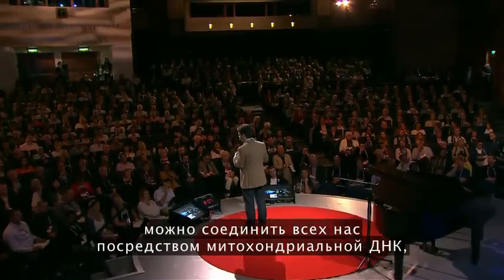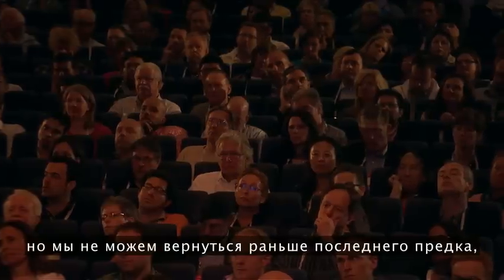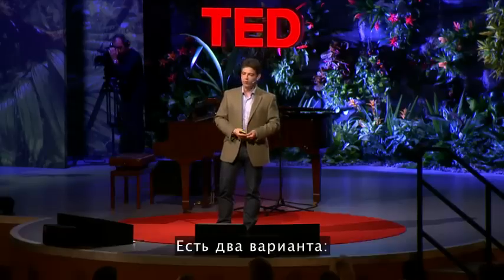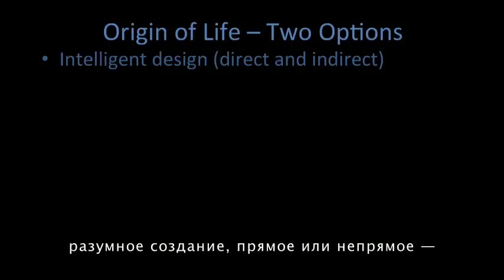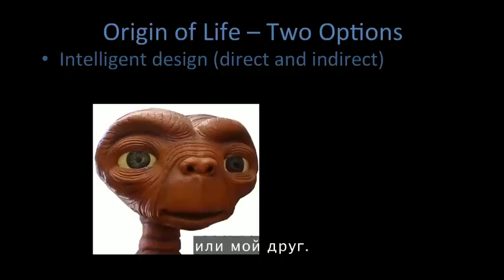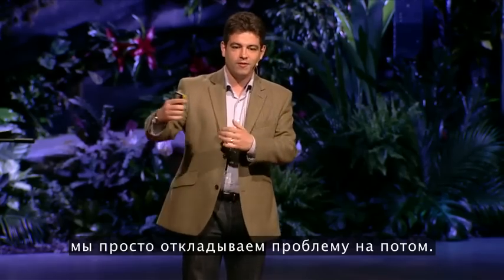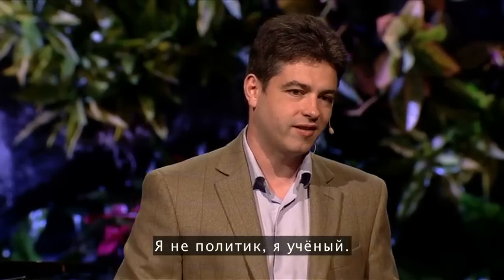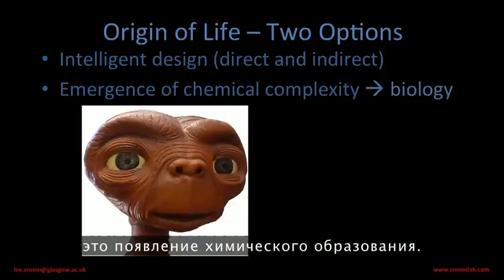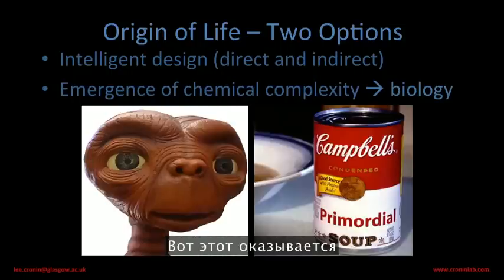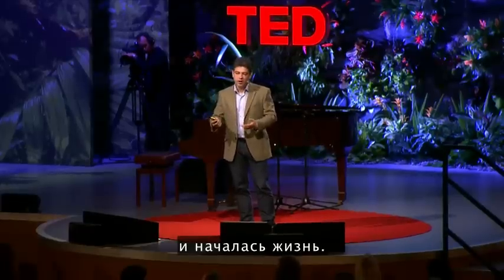But there's a roadblock you can't get past. You can decode the genome, you can look back, you can link us all together by mitochondrial DNA, but we can't get further than the last ancestor. So we don't know how we got here. There are two options: intelligent design, direct and indirect — so God or ET. Talking about ET putting us there just pushes the problem further on. The other thing we need to think about is the emergence of chemical complexity — this seems most likely. We have some kind of primordial soup, and somehow these amino acids are combined and life begins.